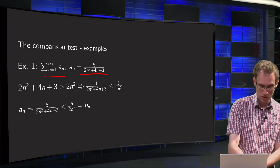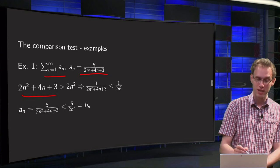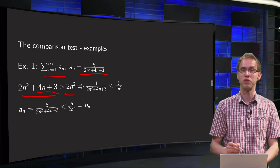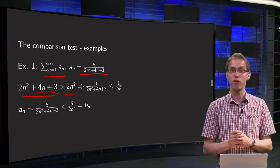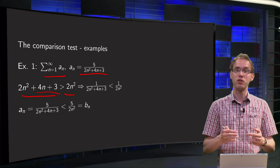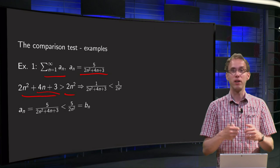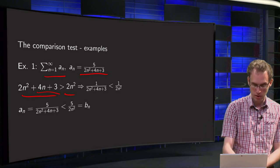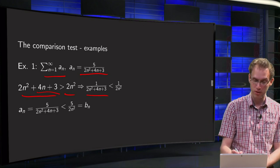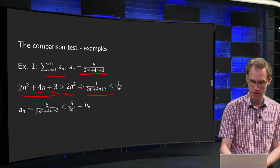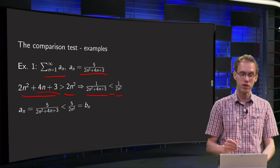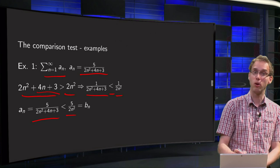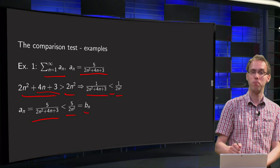We know that 2n squared plus 4n plus 3 is bigger than 2n squared, because an is positive, so this 4n plus 3 is positive. So if you do 1 over those, the inequality sign flips. We know that 1 over 2n squared plus 4n plus 3 is in fact smaller than 1 over 2n squared. So we have that our an are smaller than 5 times 2 over n squared, which we will call our bn.